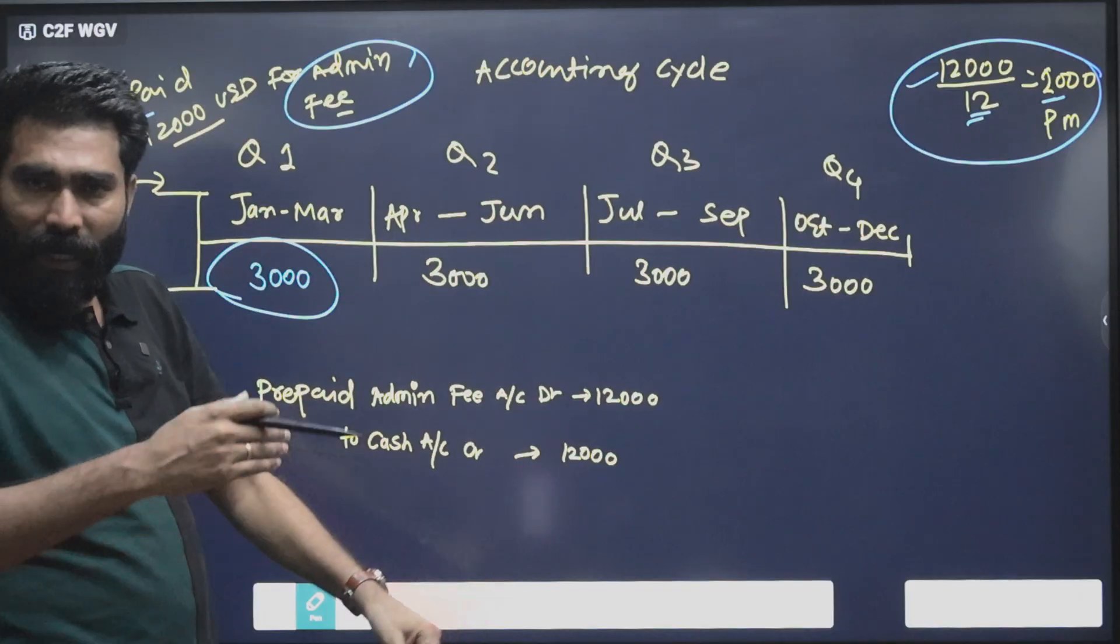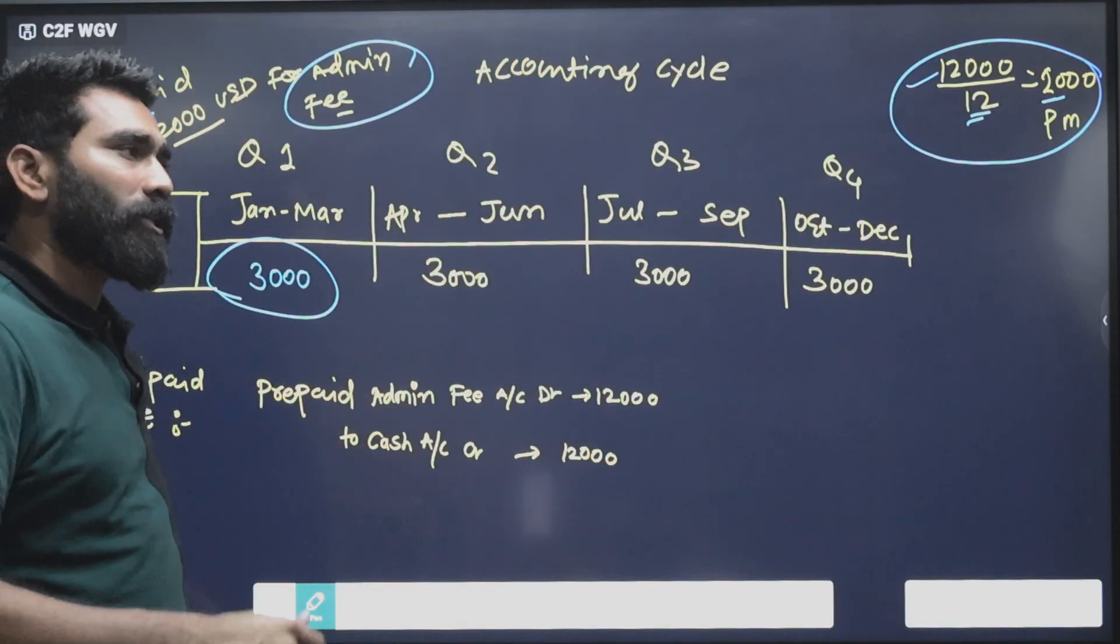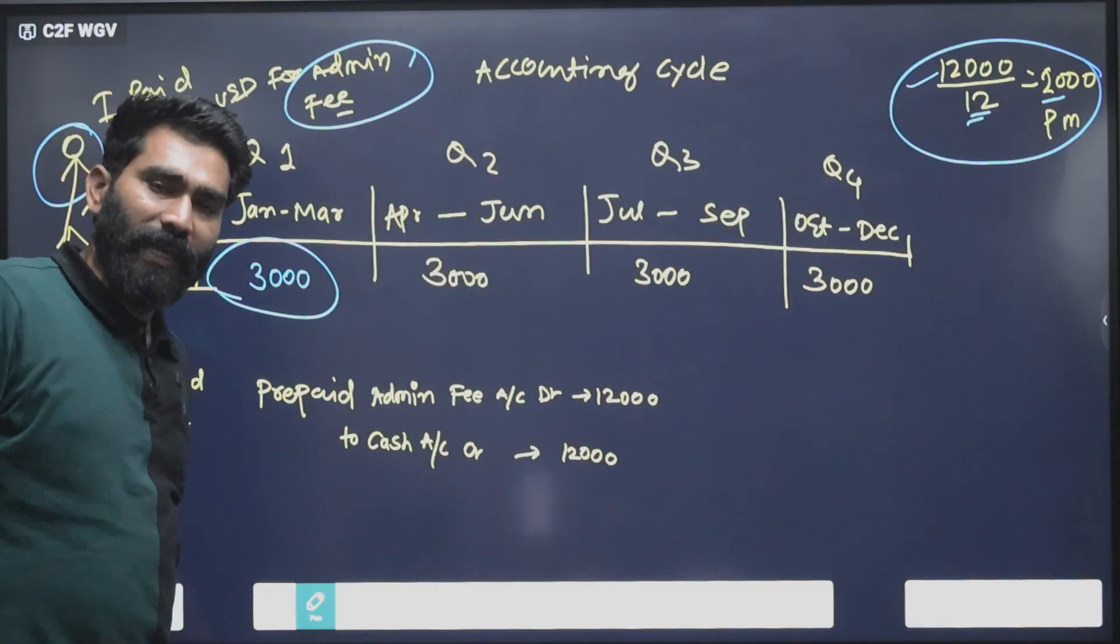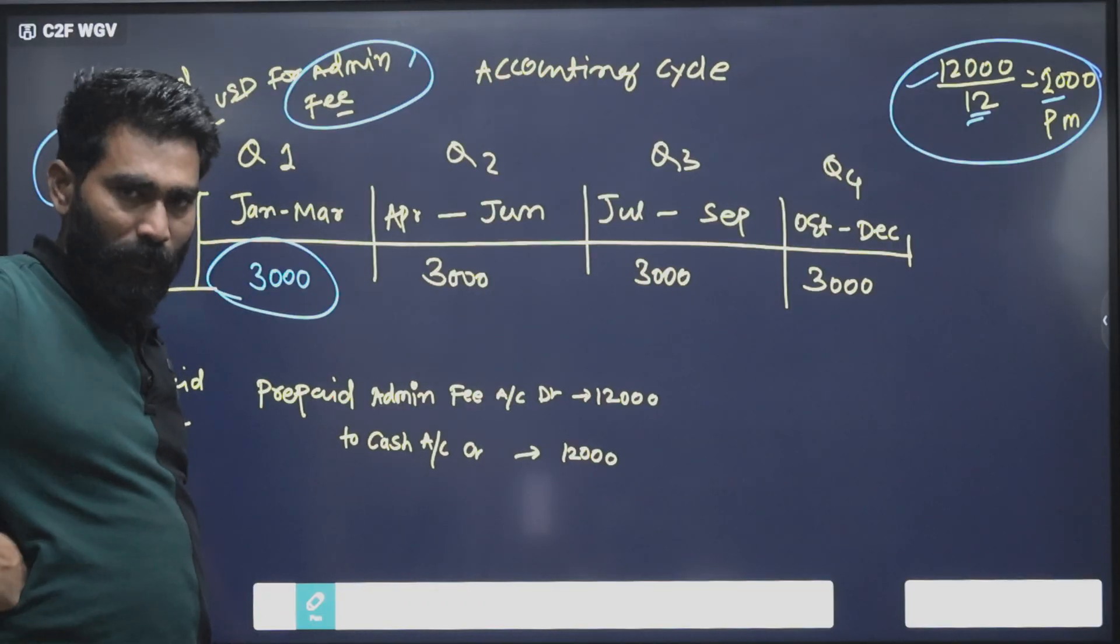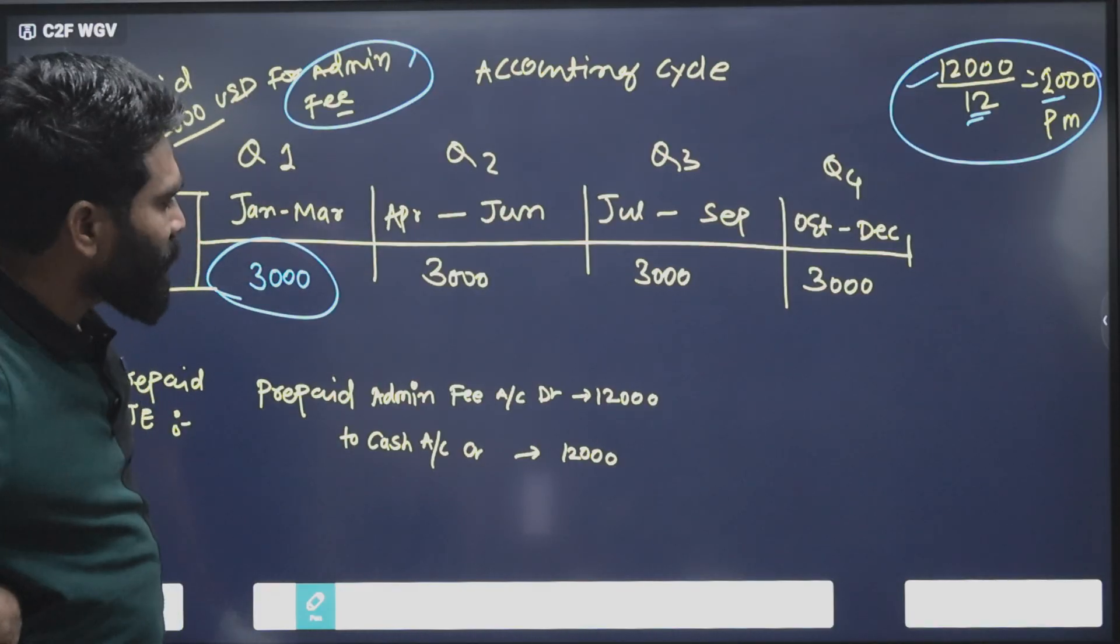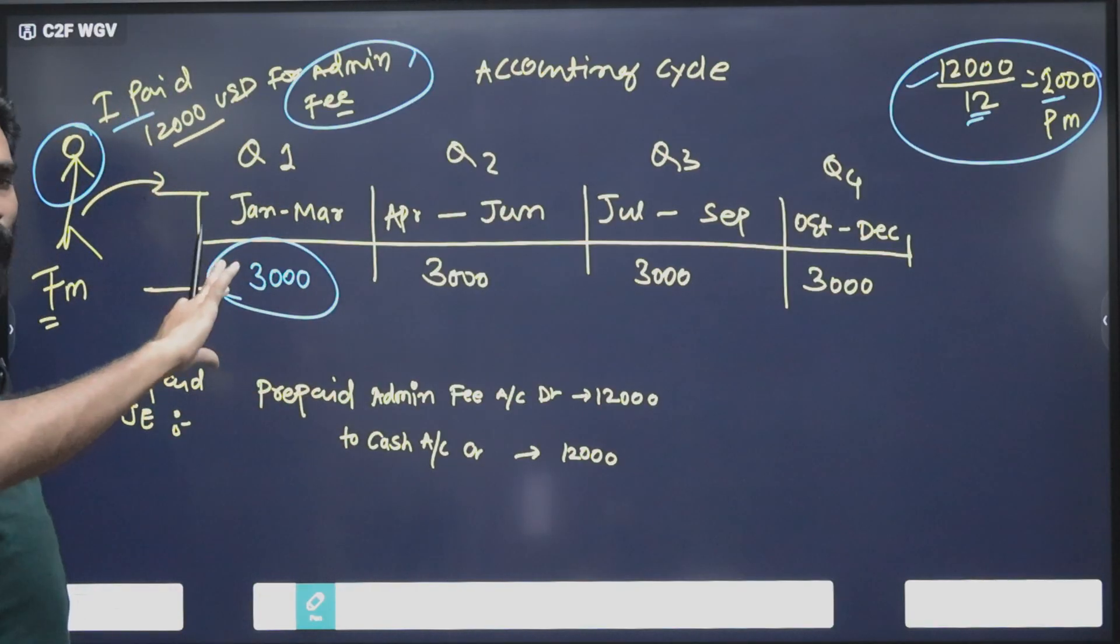If it's daily accounting, that $1,000 you can divide across 30 or 31 days because we follow conventions like 30/360 or 30/365.